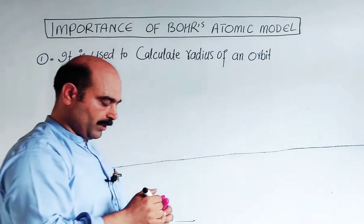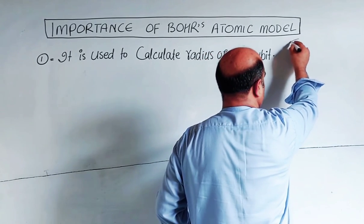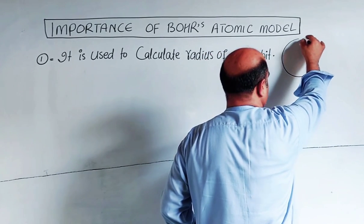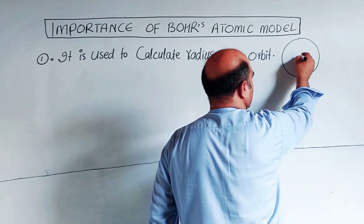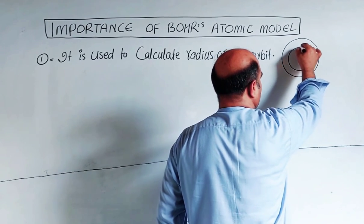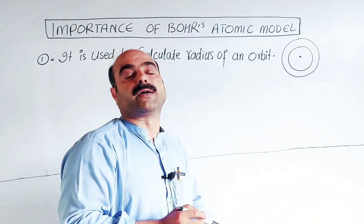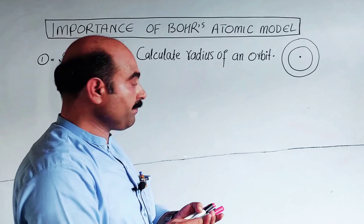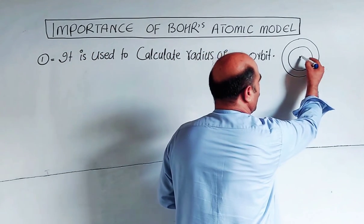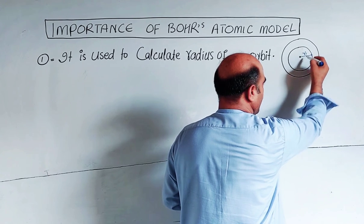Radius means the distance from the center. According to Bohr, electrons revolve around the nucleus in fixed circular paths called orbits. These fixed circular and stable paths are orbits. The first orbit has a certain radius from the nucleus.